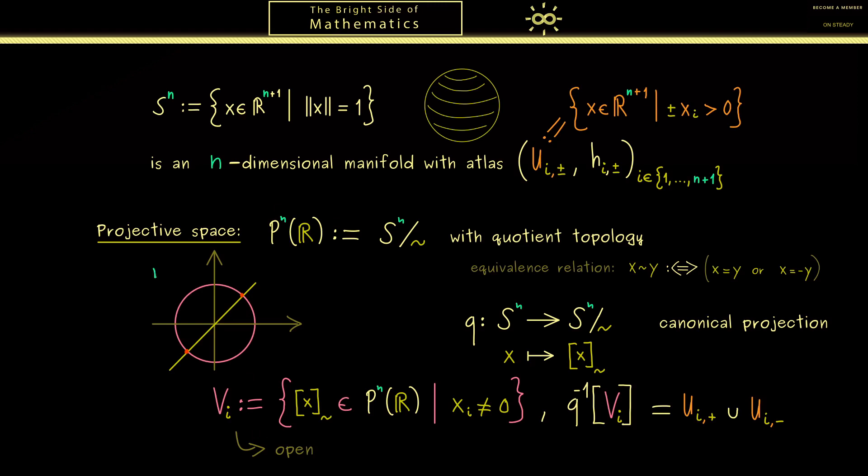Maybe we should visualize this in the case n equals 1. Then we can interpret the space P^1(R) as the collection of all lines through the origin in the plane. In this case, V_1 consists of all the lines with the exception of the line that goes through these two points. In addition, you see here on S^1, the right-hand side would be U_1^+ and the left-hand side U_1^-.